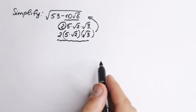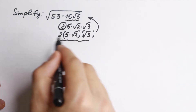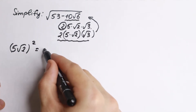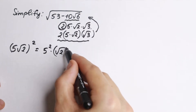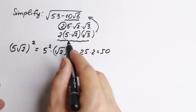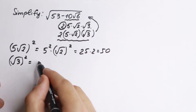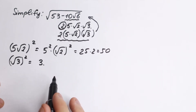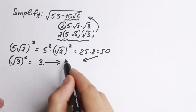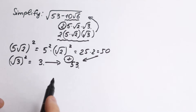Now I want to show you a really interesting trick — maybe the main moment in this problem. If we take 5 square root of 2 and square it, we get 5 squared times square root of 2 squared, which gives us 25 times 2, equal to 50. And if we square root of 3, we get 3. So 50 plus 3 equals 53, which matches the number we started with.